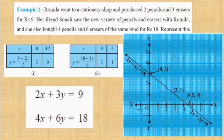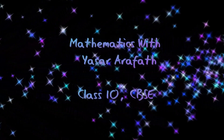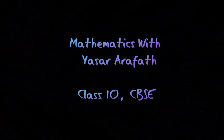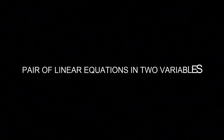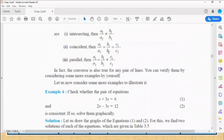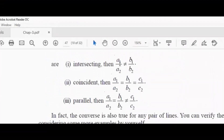Without drawing the graph, can we say whether given equations are consistent, inconsistent, or dependent? We generalize the idea: intersecting means a1/a2 is not equal to b1/b2; coincident means all ratios are equal; and parallel means the ratios of x and y coefficients are equal but the ratio of constants does not match.